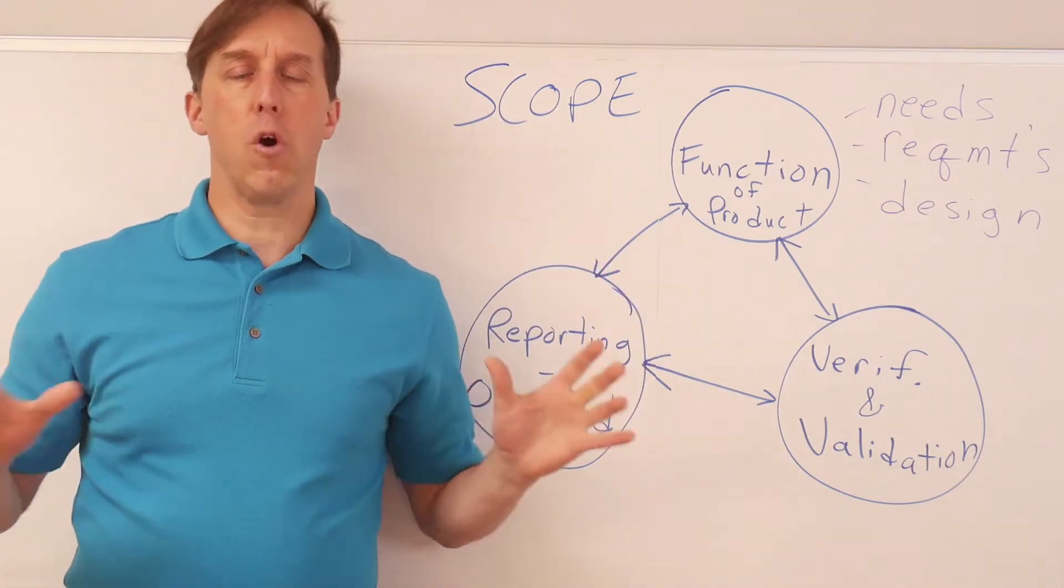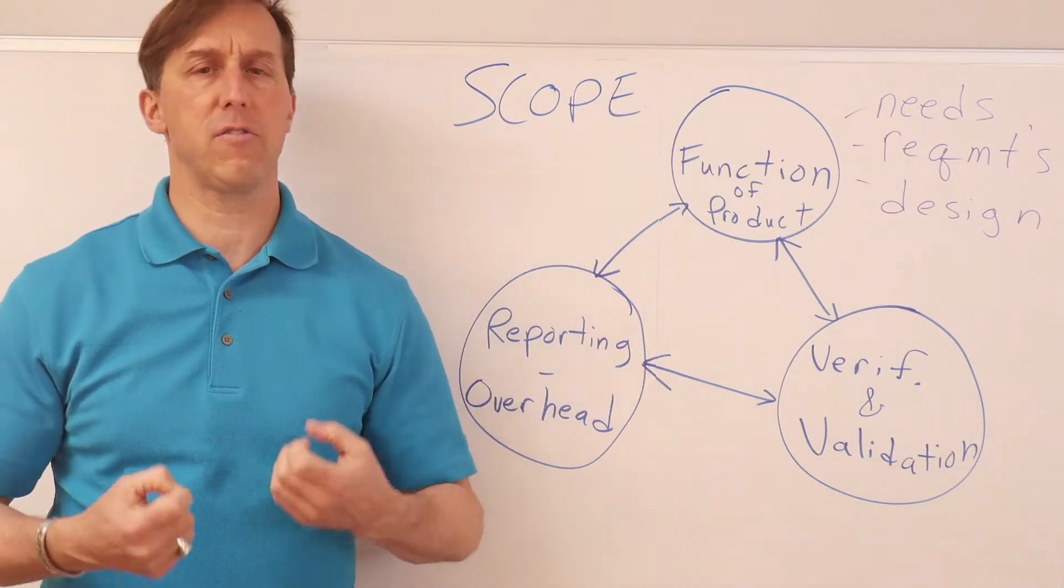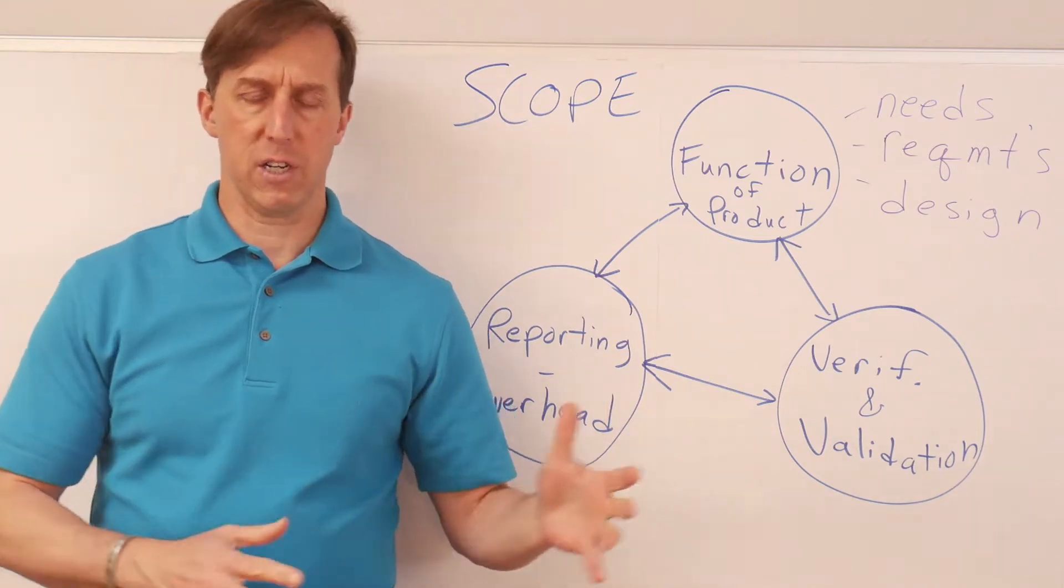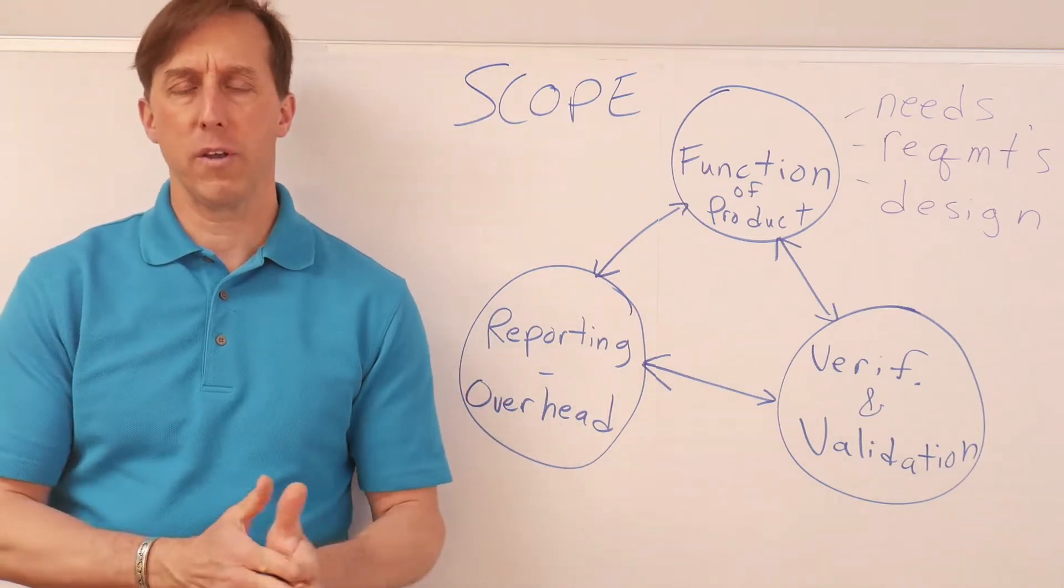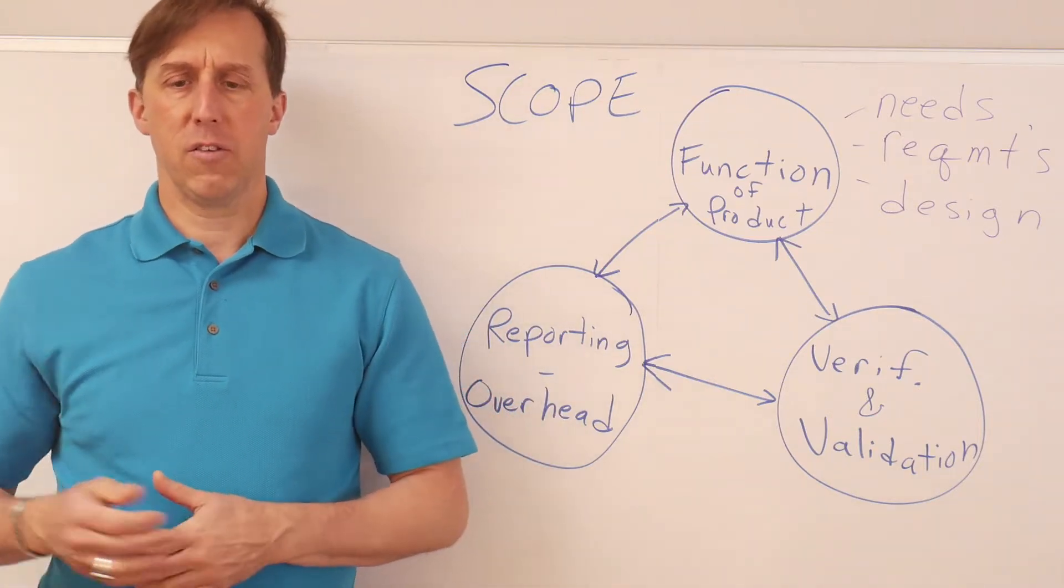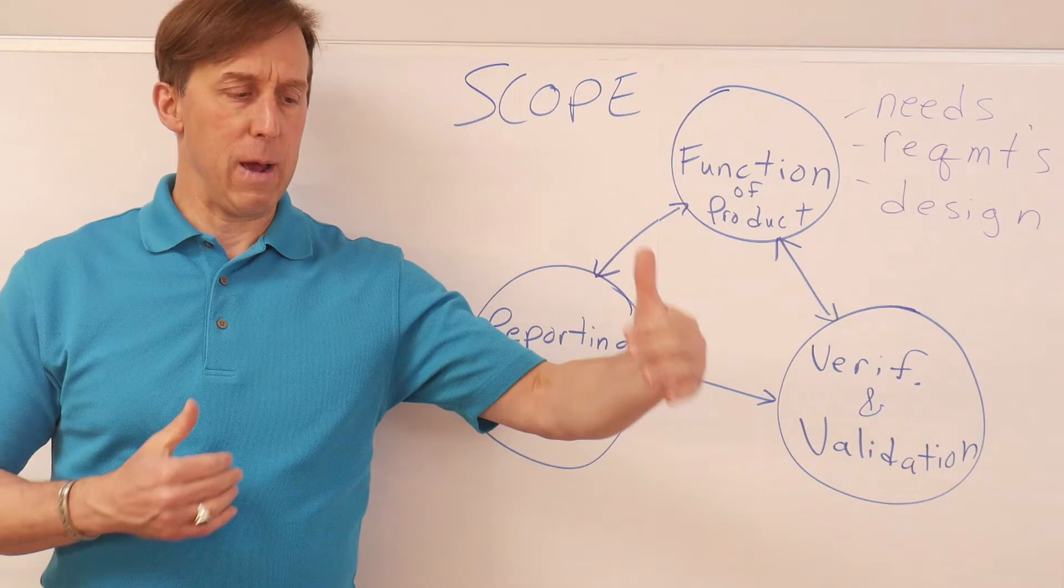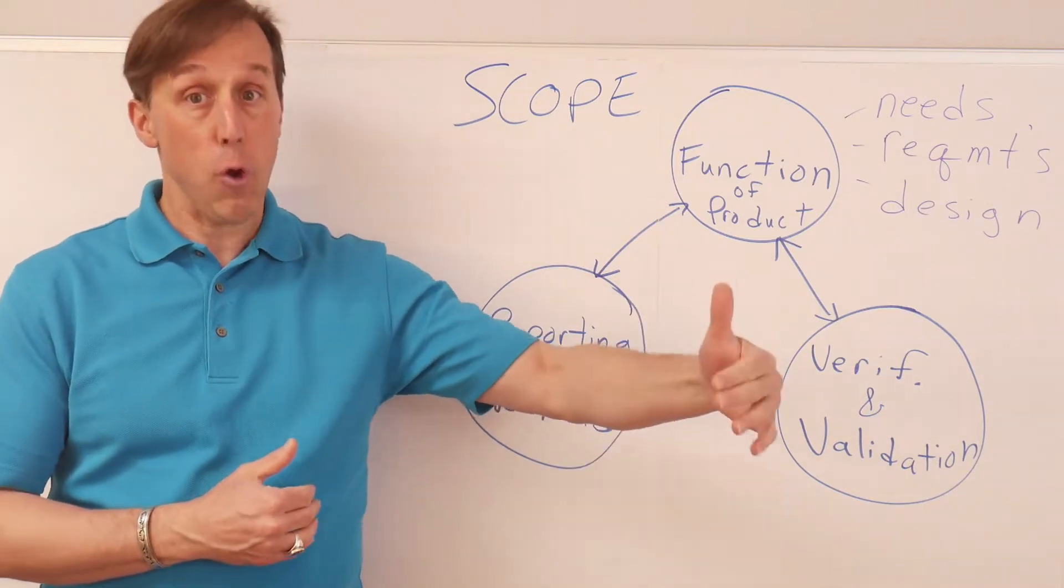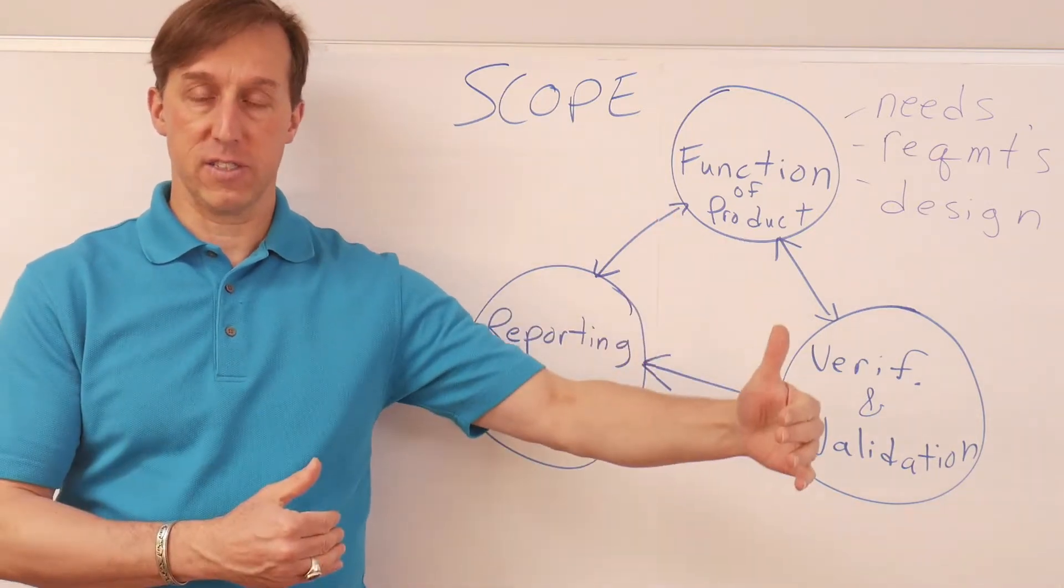Now, scope basically dictates what do we do in the project? What requirements are we going to satisfy? What design features are we going to make sure are in there? It's the amount of work that once we're complete, once that scope is completed, then the project is considered done.